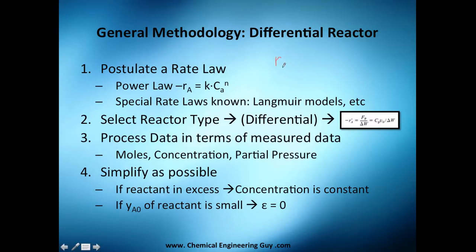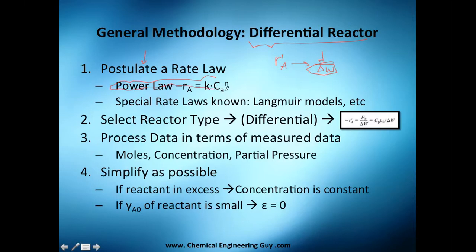We've got this special symbol here — this is because the rate is based on the weight or mass of the catalyst, not the volume of the reactor. That's why we need to use another type of reactor: the differential reactor. The first thing we do is postulate a rate law, essentially the same as before, and select the reactor type.